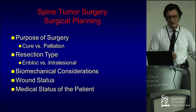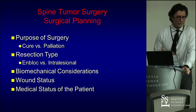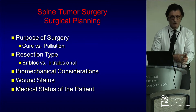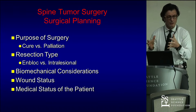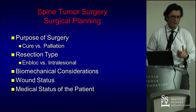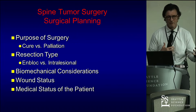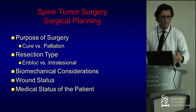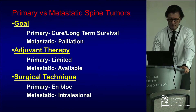Surgical planning — before you even start talking about metastatic versus primary, you have to think about what exactly you're planning to do. Are you planning to cure these patients of cancer? Are you palliating because of pain or neurological deficits? What type of surgery will you do — an en bloc resection where you take everything out without entering the tumor, or an intralesional resection where you're actually spreading the tumor? You have to think about biomechanical considerations, instrumentation levels, wound status, and the medical status of the patient. Can a patient actually go through this surgery? That's where you rely on your medical oncologist.